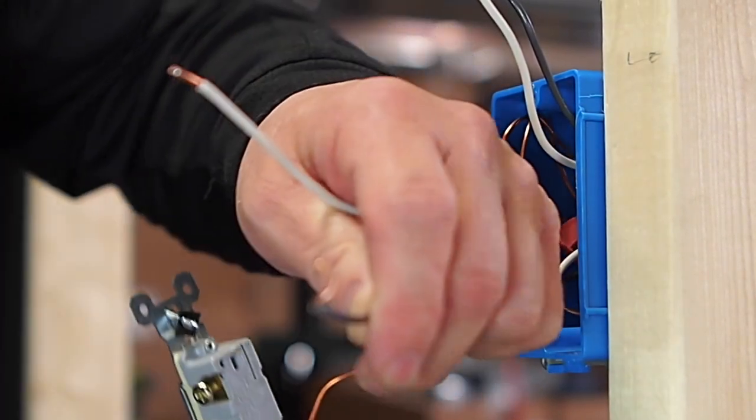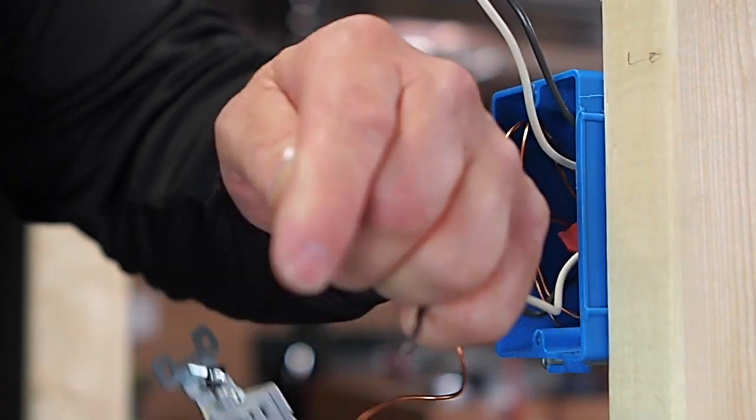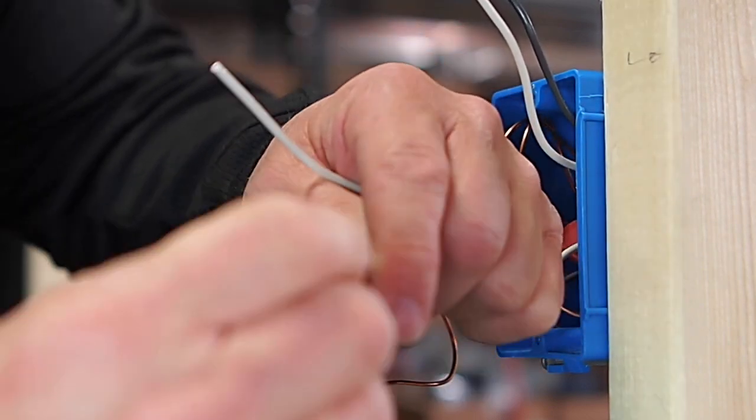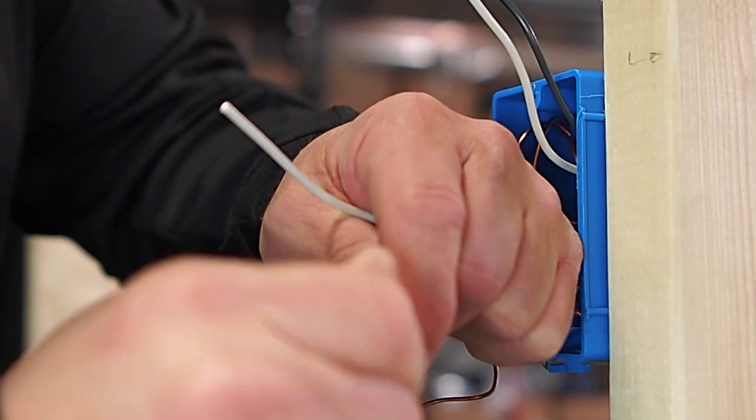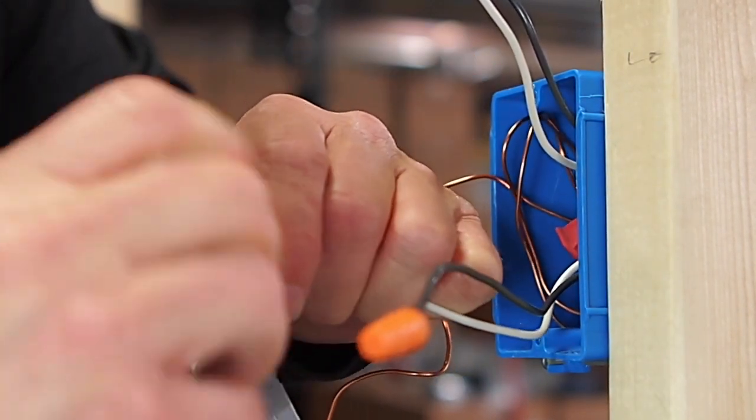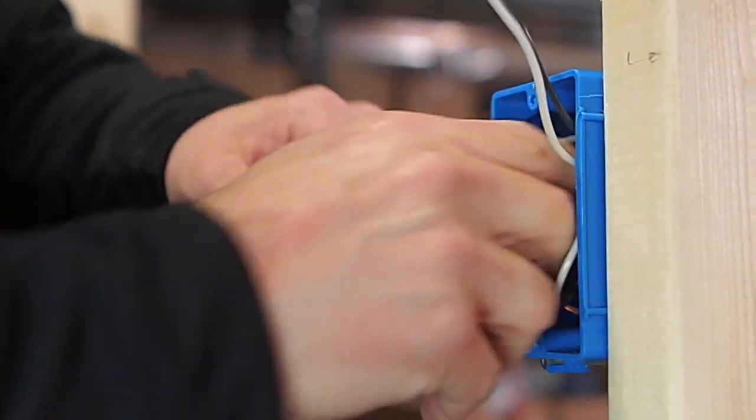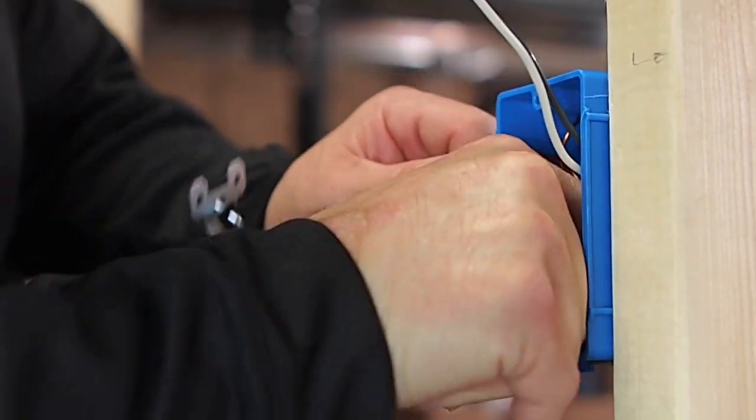And then the bottom two here, they are just not going to be in use. We are just going to dead end them in this box and just leave them. So the red signal wires, you never put any voltage on. So we are just simply going to stick these back in the box.